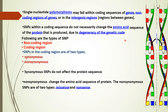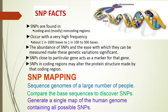This is due to degeneration of the genetic code. The types of SNPs are: non-coding region and coding region. SNPs in the coding region are further divided into two types — synonymous and non-synonymous. Synonymous SNPs do not affect the protein sequence, whereas non-synonymous SNPs change the amino acid sequence of the protein. Non-synonymous SNPs are further divided into missense and nonsense.